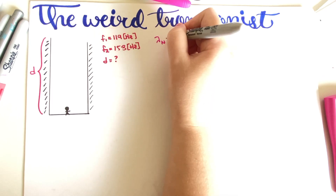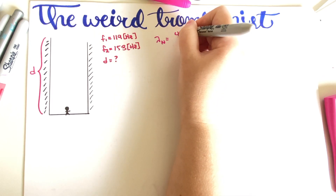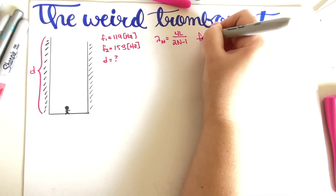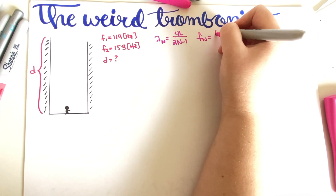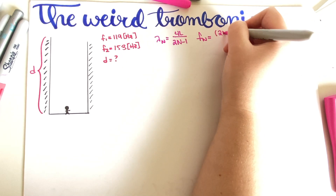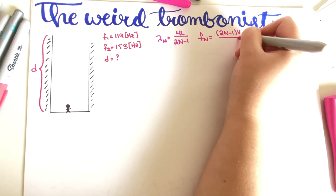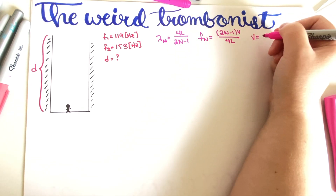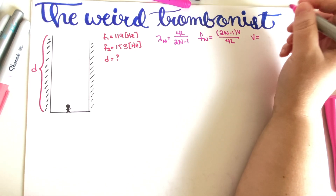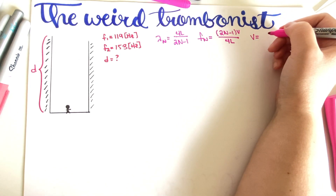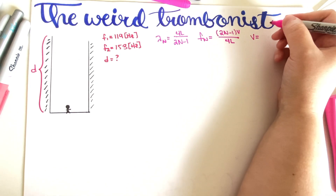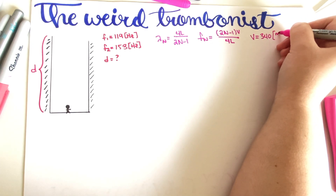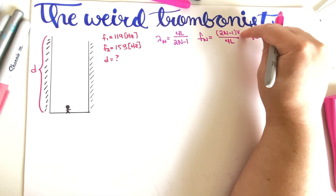I'm going to write the equations for closed-open standing waves from our introduction video. Wavelengths are λ = 4L / (2N−1), and frequencies are f = (2N−1)v / 4L. They're also telling us that the speed of sound in air is 340 meters per second, which we're going to need.